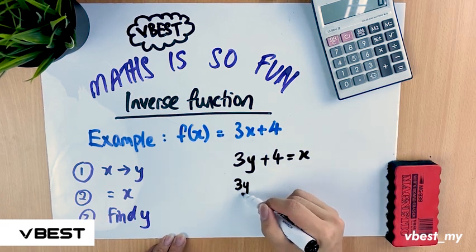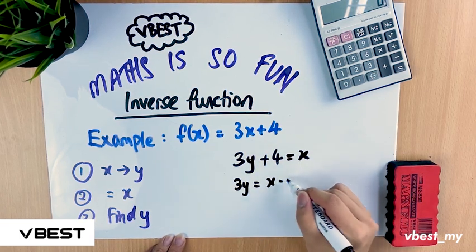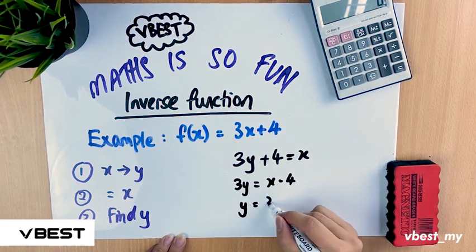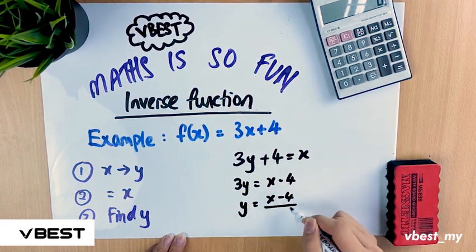So 3y equals x. Plus 4 moves there, it becomes minus 4. To find y, the 3 has to move to the other side, so x minus 4 divided by 3.